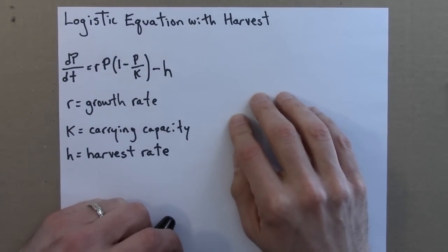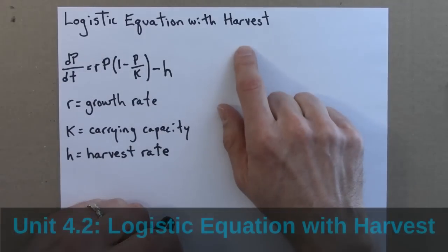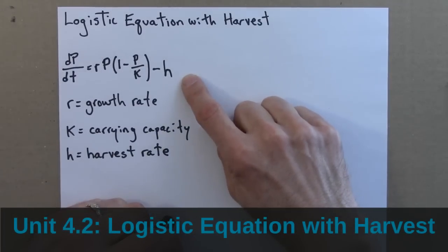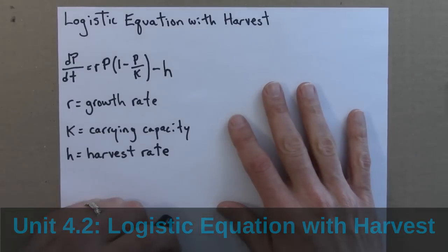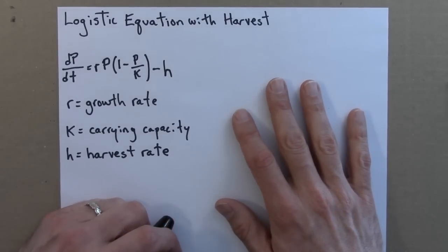In this video, I'll introduce a modified version of the logistic equation, called the logistic equation with Harvest. I'll use this model to show an example of a bifurcation, and we'll construct a bifurcation diagram, a really important type of diagram in the study of all sorts of dynamical systems.